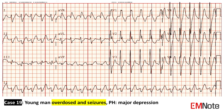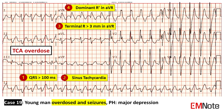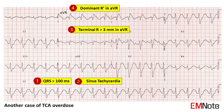Case 19: The patient is a young man with major depression, presenting with drug overdose and seizures. The ECG shows several findings compatible with tricyclic antidepressant intoxication, which include QRS above 100 ms, sinus tachycardia, terminal R-wave greater than 3 mm in AVR, and dominant R' in AVR.